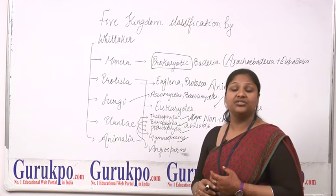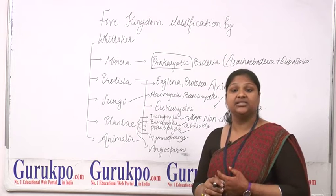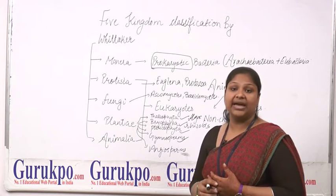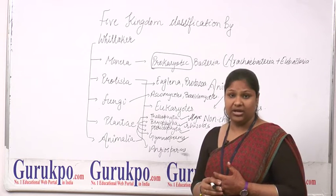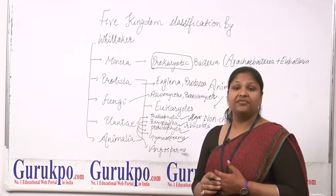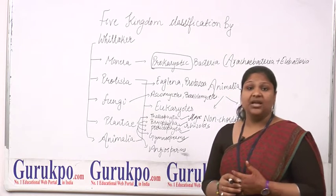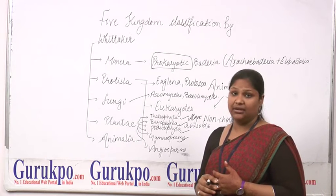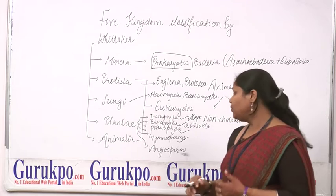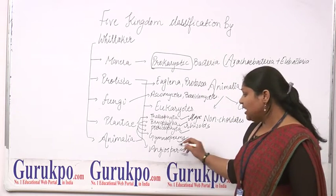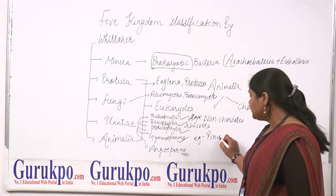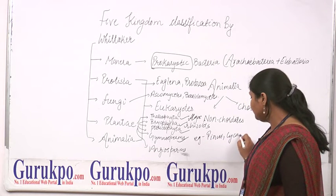Gymnosperms are plants with naked seeds — their seeds are not covered by any outer covering or seed coat. They also have vascular tissue, except they do not contain vessels in the xylem or companion cells in the phloem. Examples of gymnosperms include Pinus and Cycas.